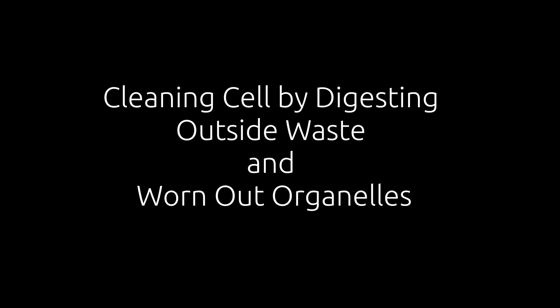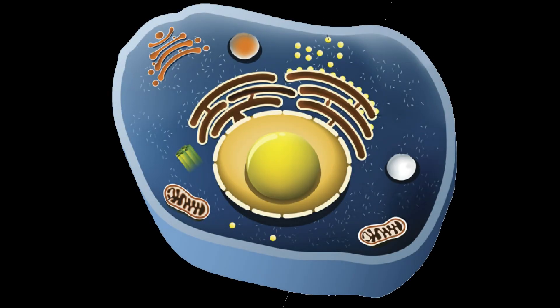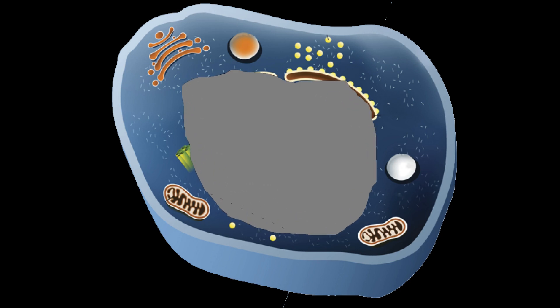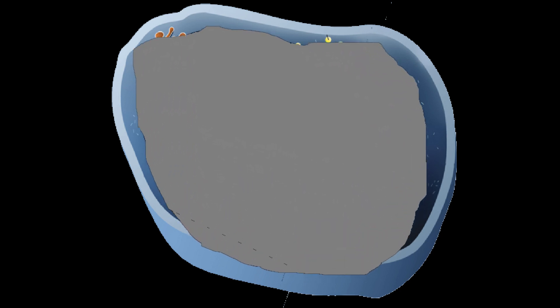Function of Lysosomes. Lysosomes help to keep the cell clean by digesting any foreign material as well as worn-out cell organelles. When the cell gets damaged, lysosomes may burst and the enzymes digest their own cell. Therefore, lysosomes are also known as suicidal bags of a cell.